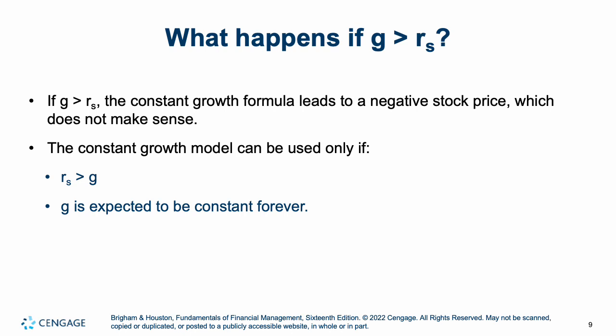What happens if growth is greater than return on the stock? If dividends are growing faster than your stock return, the constant growth formula would give you a negative stock price — which is not possible. The lowest a stock price can be is zero. The constant growth model can only be used if stock return is greater than growth, and you expect that growth to be constant forever. Not all companies meet that requirement.